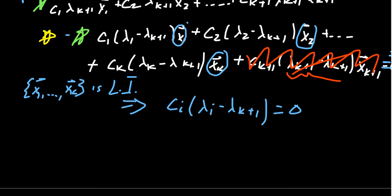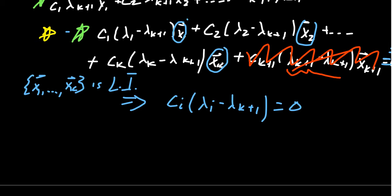Now, by the zero product property, if this product is zero, this would imply that either CI equals zero, or lambda I equals lambda K plus 1. That's because lambda I minus lambda K plus 1 would equal zero. And this possibility is not possible, because we are assuming that all of these eigenvalues are distinct. So since they're distinct, that factor is not zero. So it must have been all of the original factors were zero as well.